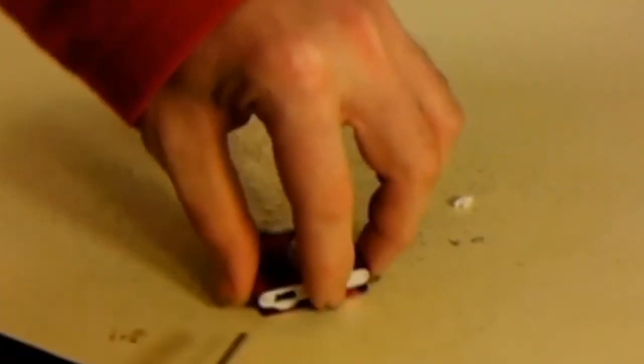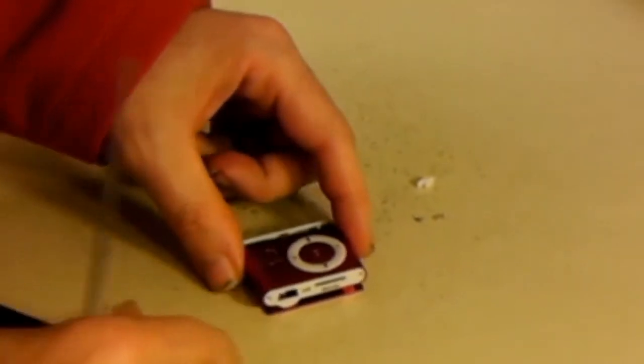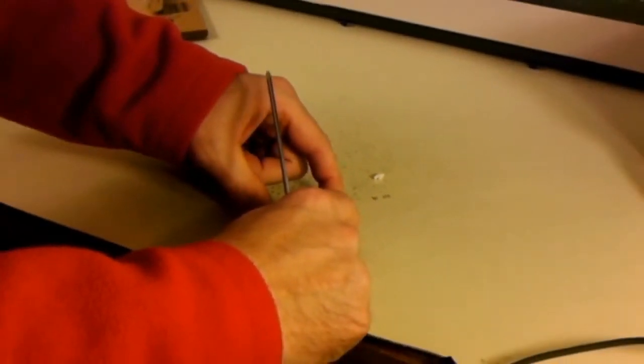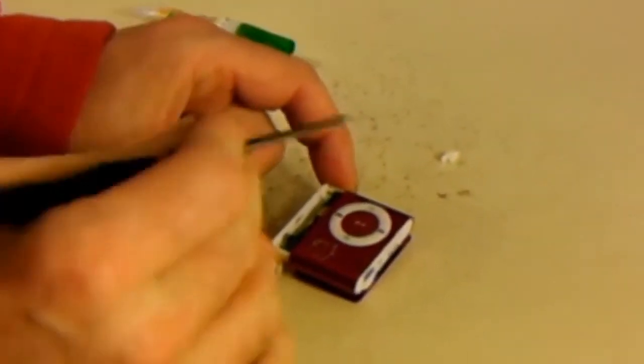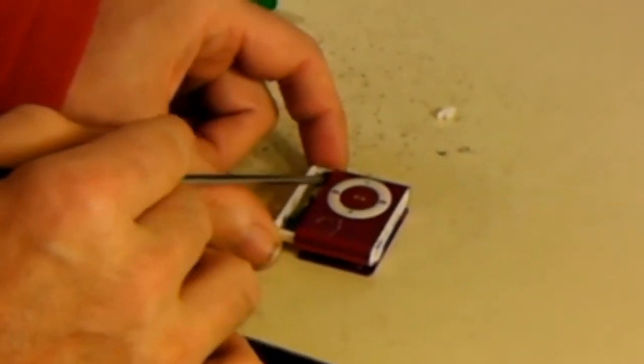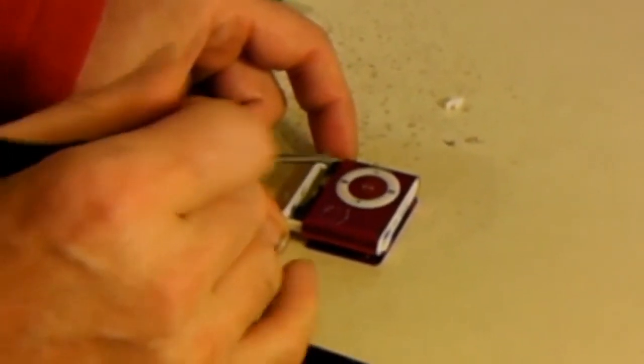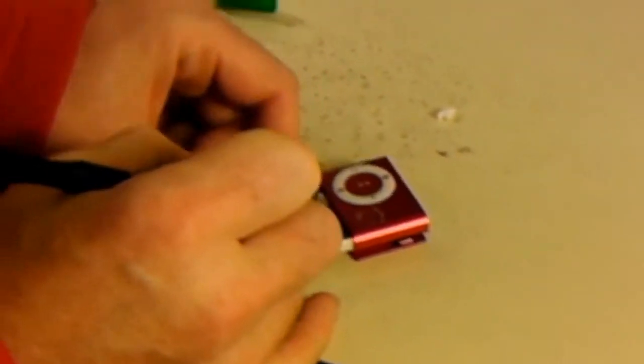So that holds the button in place. I only want to pull this out far enough—I want to keep this board underneath the button that way this is still holding that side of the button, and the board is still there to hold the other side of the button in place.